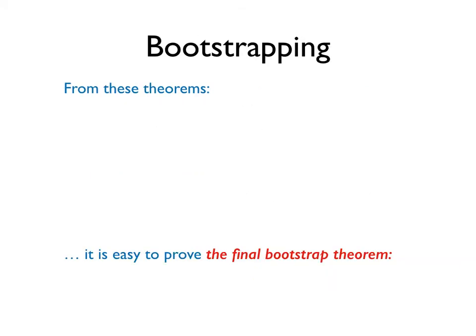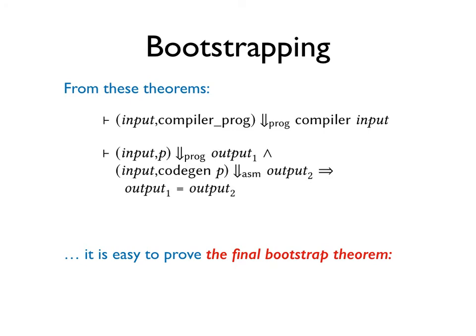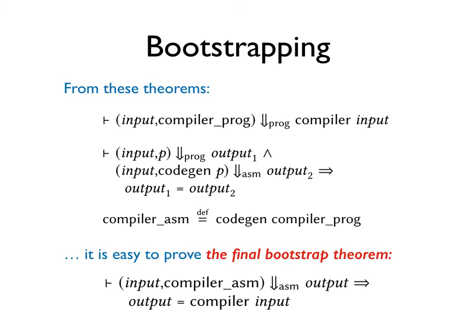Now we have all the parts we need. We have the correctness of compiler-prog, we have the correctness of the code generator, and a definition of the compiler as assembly code. From these, it is easy to prove the final bootstrap theorem. As you can see, this follows by modus ponens of the top two theorems on the slide.